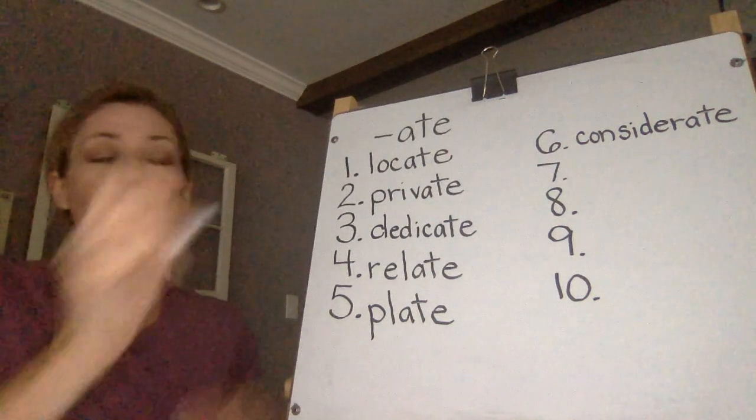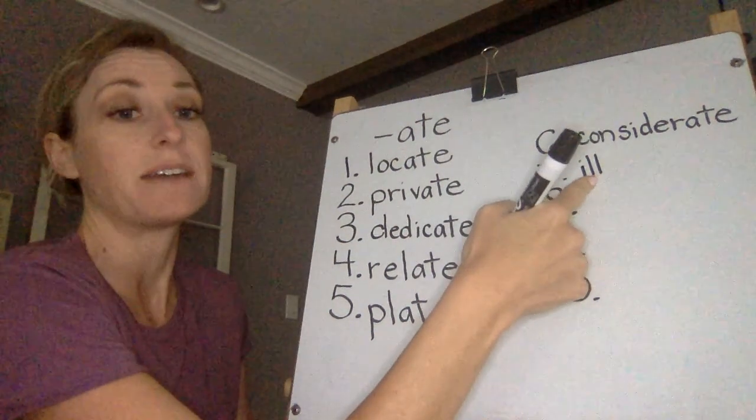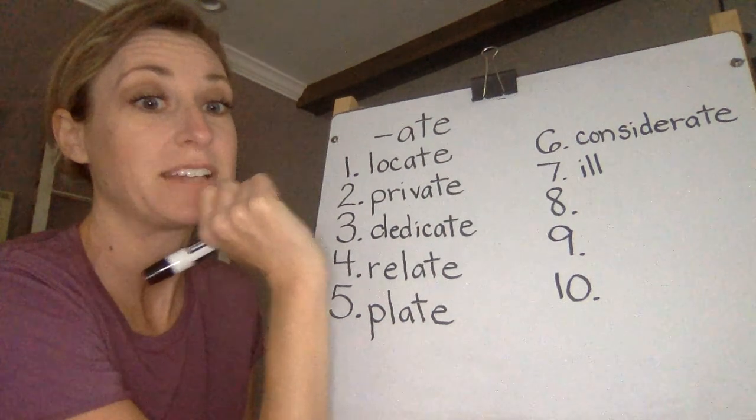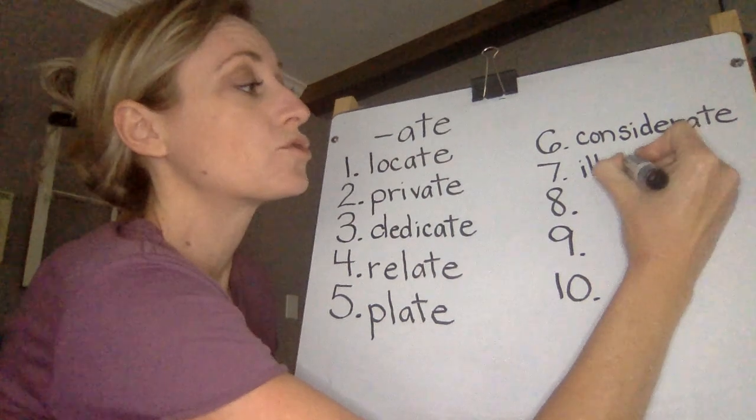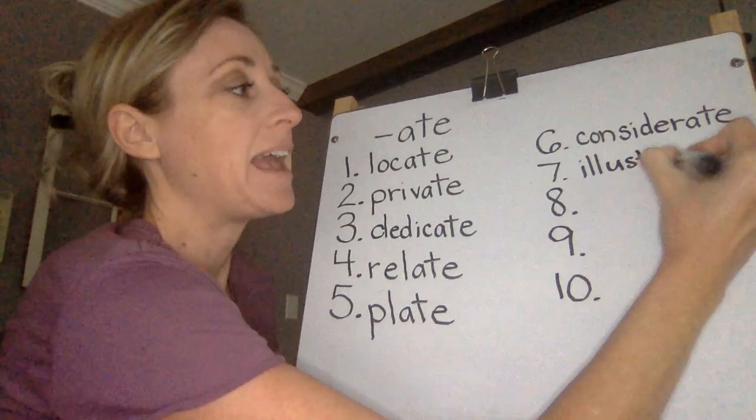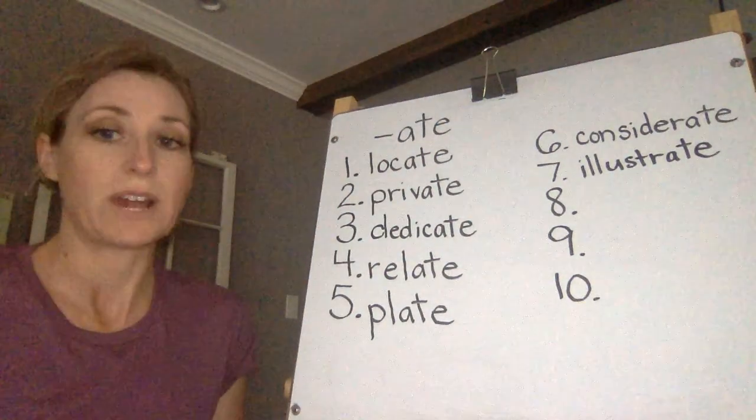Number seven, illustrate. Ill is the first syllable. I-L-L-U-S-T-R. I'm hearing a three-letter consonant blend there. A-T-E. So that is making the correct sound. Illustrate.